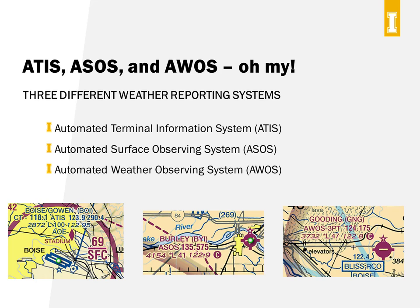The second is the Automated Surface Observing System, or ASOS. This is a fully automated — meaning no human being involved — weather reporting system operated by the National Weather Service or the Department of Defense. All weather, all day long. Burley's airport has an ASOS station at 135.575 megahertz. The third is the Automated Weather Observing System, or AWOS, which is also a fully automated weather reporting system, but they're operated and controlled by the FAA directly. Gooding's Airport has an AWOS station that operates at 124.175 megahertz.